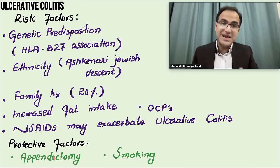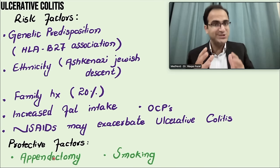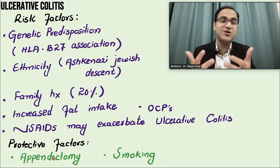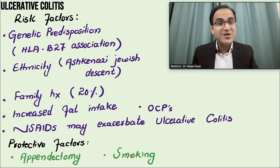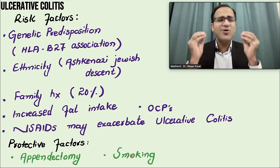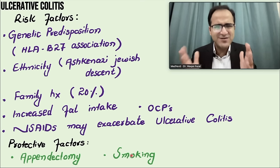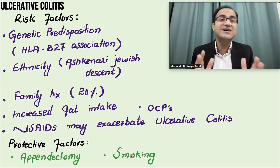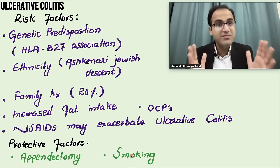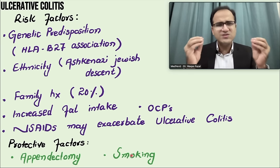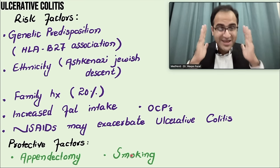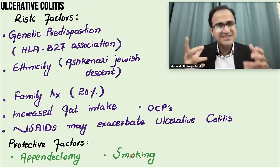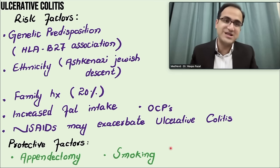The protective factors of ulcerative colitis include appendectomy and smoking. In the past, appendectomy was used as a treatment — removing the appendix used to resolve ulcerative colitis. Smoking is the only condition where smoking helps. However, the risks of smoking are so great — it causes so many cancers — that you can never ask the patient to start smoking, but studies have shown it has a protective effect in ulcerative colitis.